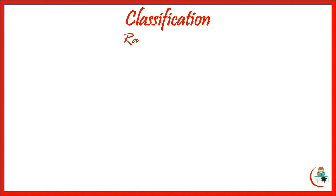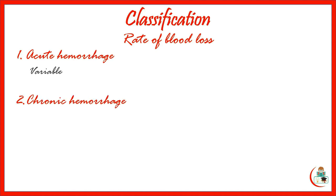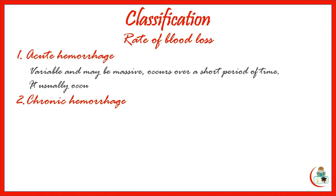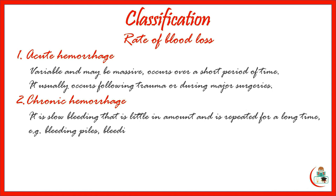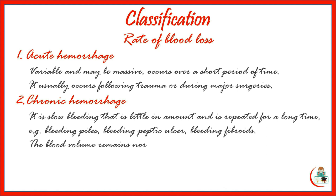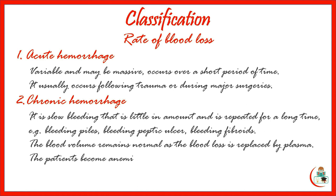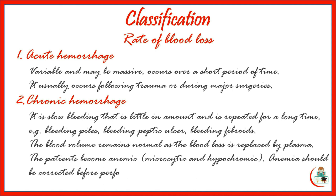Hemorrhage is also classified according to the rate of blood loss into acute and chronic hemorrhage. The acute type is variable in amount and may be massive; more importantly, it occurs over a short period of time, usually following trauma or during major surgery. Chronic hemorrhage is a slow type of bleeding, usually little in amount and repeated over a long time — for example, bleeding piles, bleeding peptic ulcer, or bleeding fibroids in a female. Blood volume in these patients remains normal, but blood loss is replaced by plasma as a compensatory mechanism. The patients become anemic — specifically microcytic hypochromic anemia — which should be corrected before performing the required surgery.